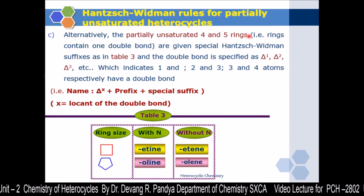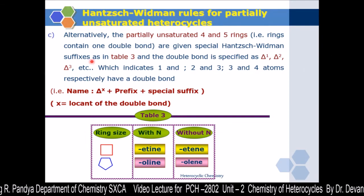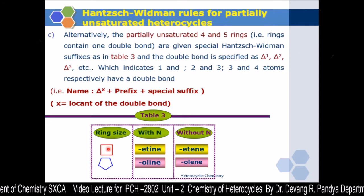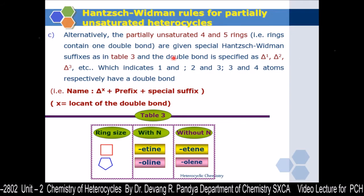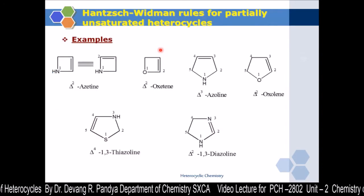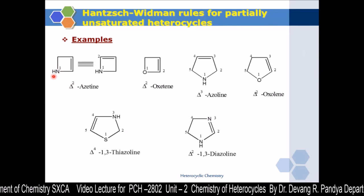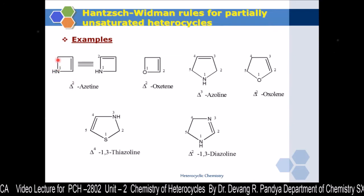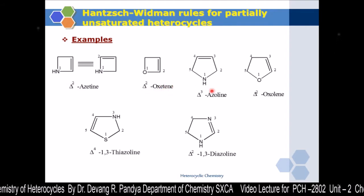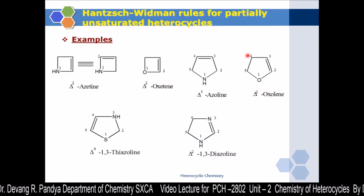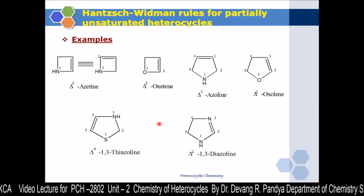Alternatively, four- and five-membered rings containing one double bond are given specific Hantzsch-Widman suffixes. The specific nomenclature suffixes for four- and five-membered rings with one double bond are indicated for the unsaturated position. For example, using delta notation: delta-2 indicates the position of unsaturation. Examples include delta-3-azoline, delta-2-oxetine, and similar names for four- and five-membered partially unsaturated heterocyclic compounds.